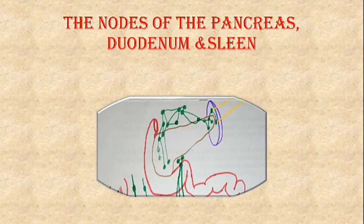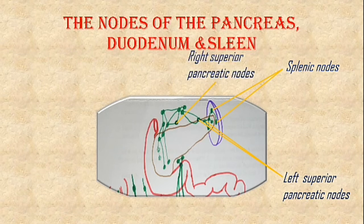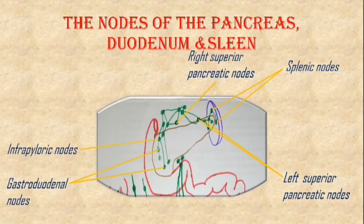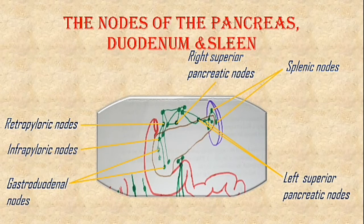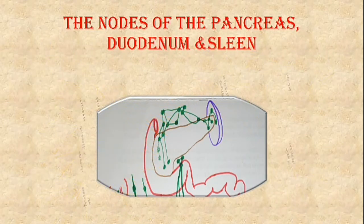Now let's remove the stomach from the picture to visualize more nodes beneath it. These are the splenic nodes. Here are the left superior pancreatic nodes and the right superior pancreatic node. The gastroduodenal nodes. The infrapyloric nodes. The retropyloric nodes lie posterior to the pylorus of the stomach. The suprapyloric nodes. All of these drain into the celiac nodes as shown here.